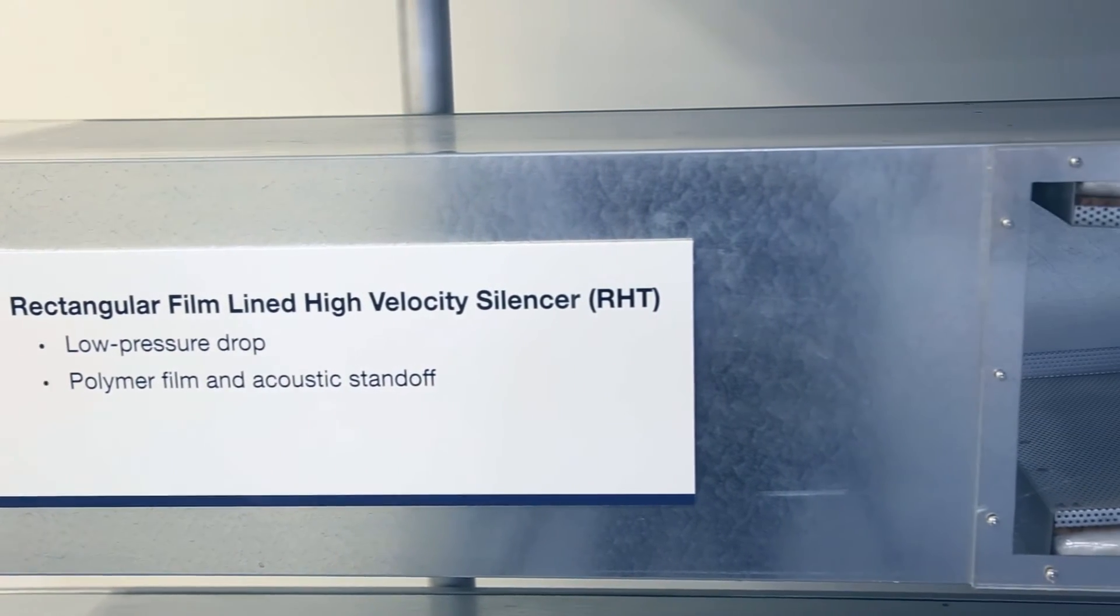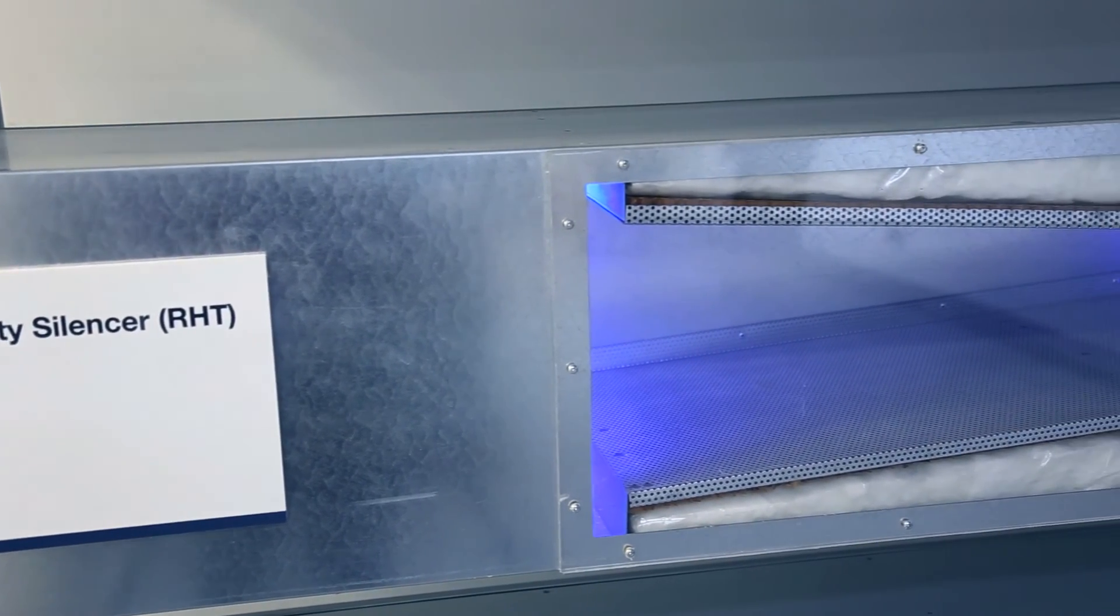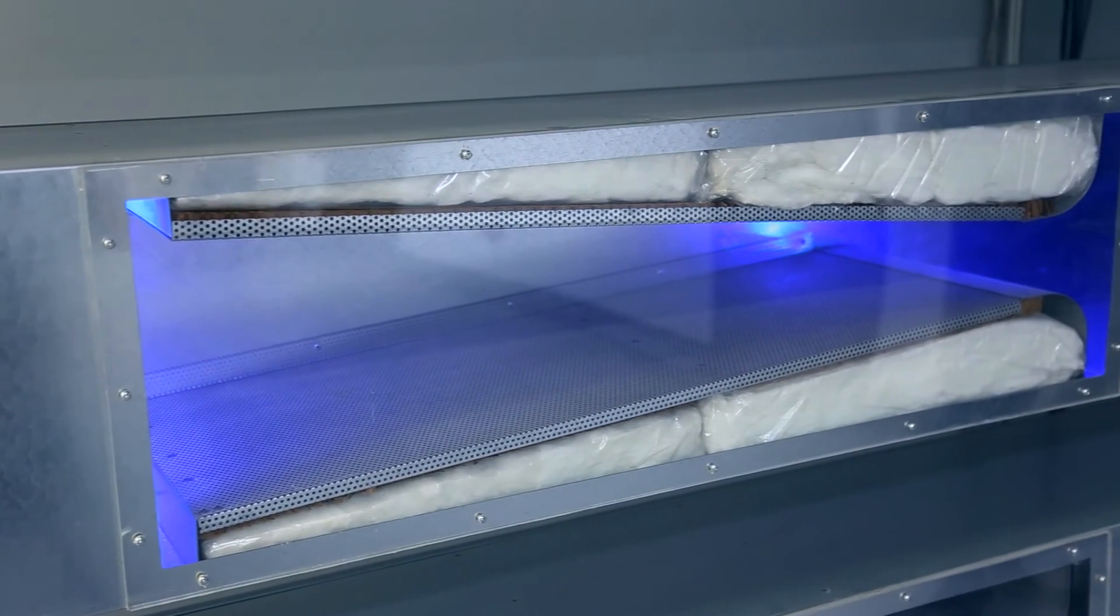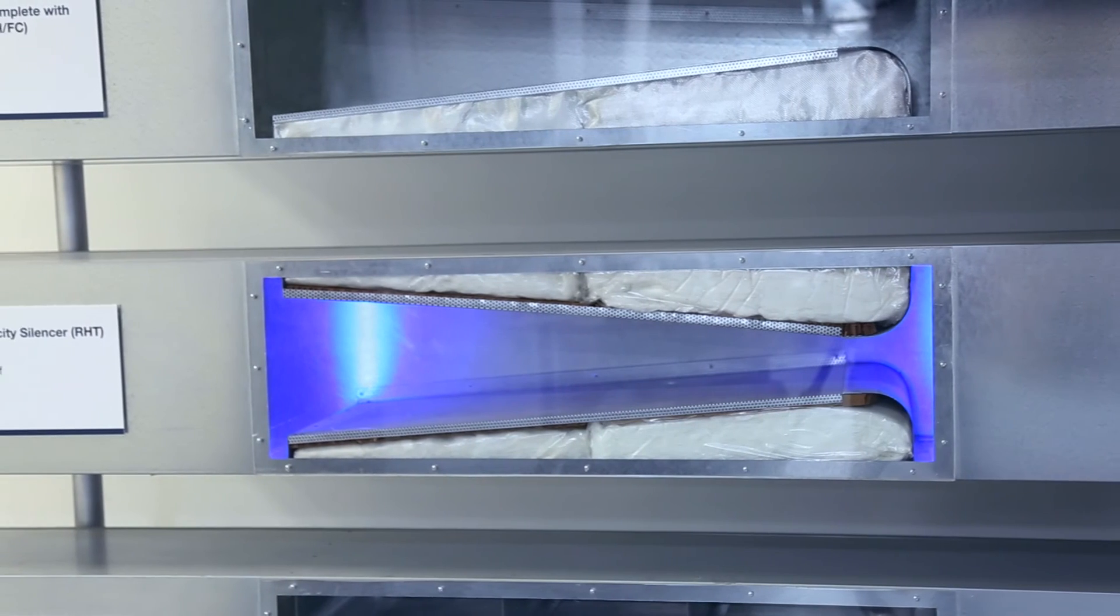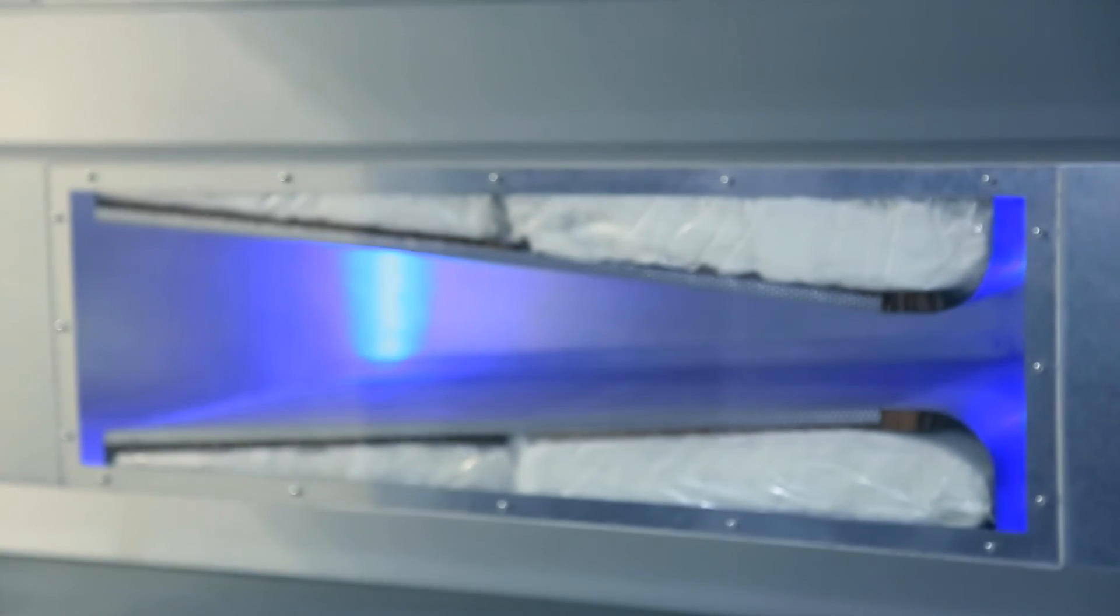The next silencer is a rectangular high velocity silencer with a polymer film liner. Polymer film lined silencers are often used where there is concern with fiberglass from entering the airstream or if there's contaminants in the airstream that you want to protect the acoustic media from. We'll run the sound and airflow measurement through this unit.